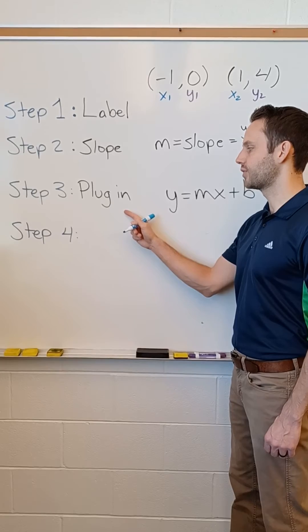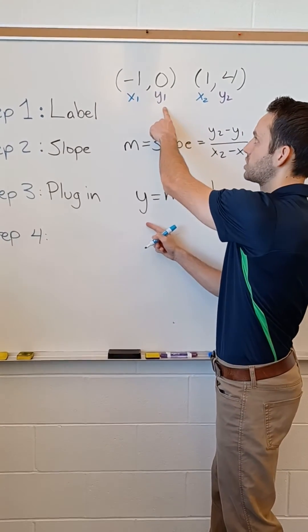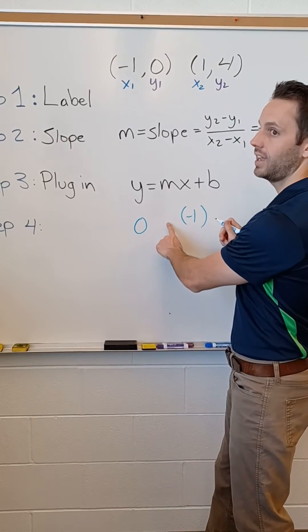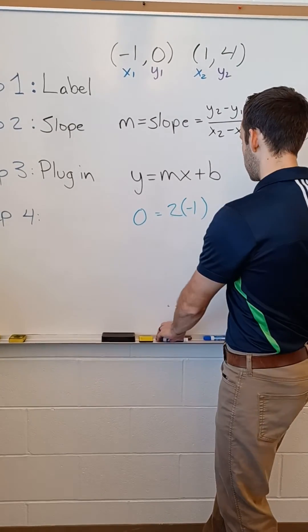Step three, plug in your value. Our y value that we're going to use is just from the first point, zero. Our x value from the first point, negative one. Plug in your slope, which was two. Now we just have b remaining.